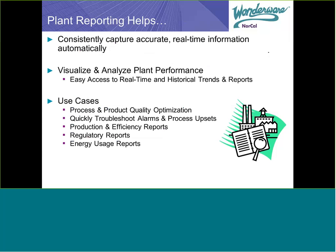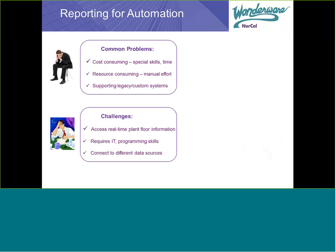Plant performance management systems allow plant personnel at all levels to visualize and analyze plant performance via real-time and historical data trends and reports. They enable easy sharing of plant data, often via the web, to accelerate operational decisions. Plant reporting can expose valuable real-time information on process upsets and inefficiencies so remedial actions can be formulated and implemented immediately. It can also expose quality issues that increase costs and jeopardize customer satisfaction, supplying the detailed information manufacturers need to improve plant profitability and competitiveness.